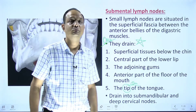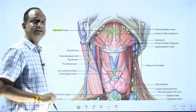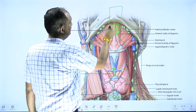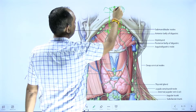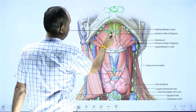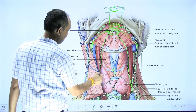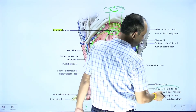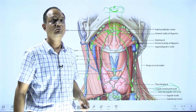These submental lymph nodes ultimately drain into the submandibular group of lymph nodes or into the deep group of lymph nodes. The deep group lies along the lower part of the internal jugular vein and is known as the jugulodigastric — specifically the jugulo-omohyoid group. So lymph from the submental group goes to both the submandibular group and the jugulo-omohyoid group of lymph nodes.